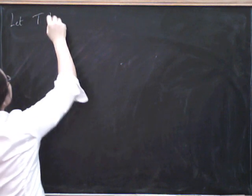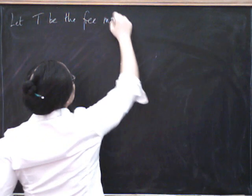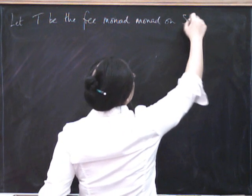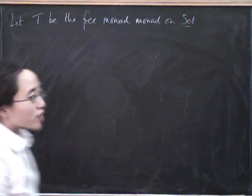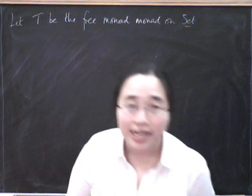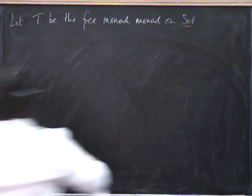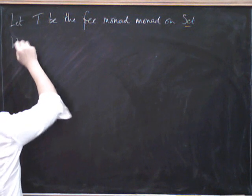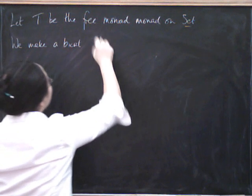Let T be the free monoid monad on the category of set. So it takes a set and it produces the free monoid on that set. Now, I'm going to construct a bi-category that's a bit like the bi-category of spans, but it's going to have some T's stuck into it all over the place. We're going to make a bi-category of T-spans.